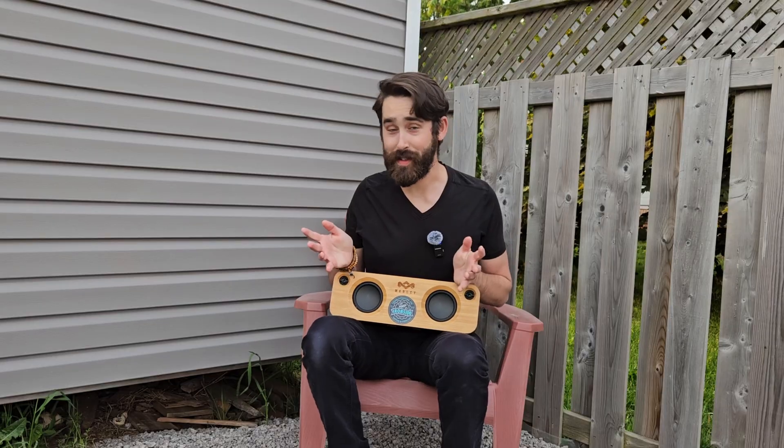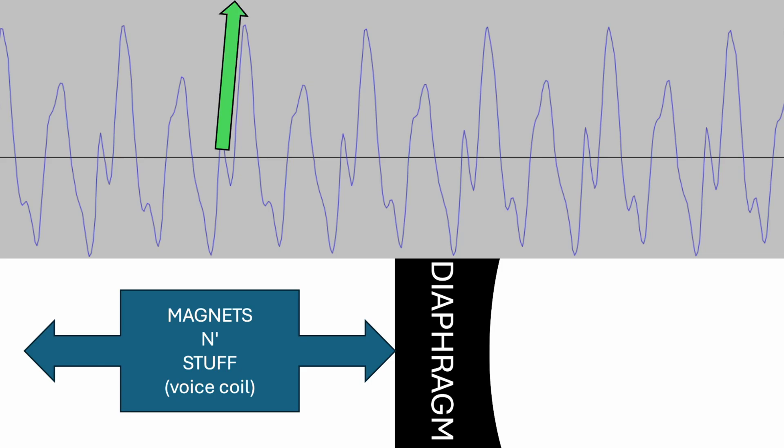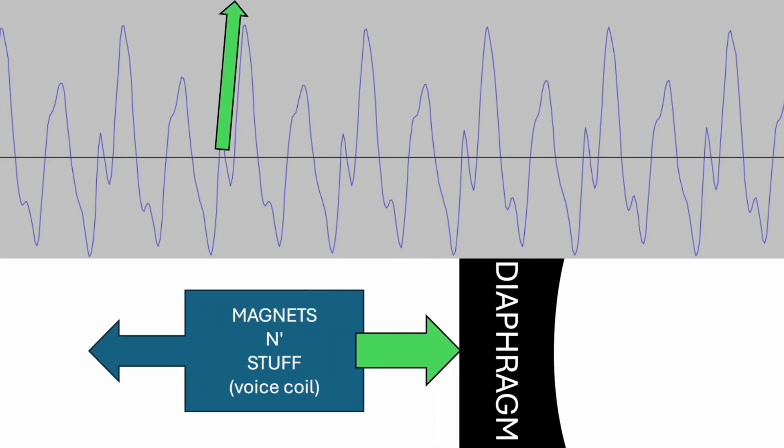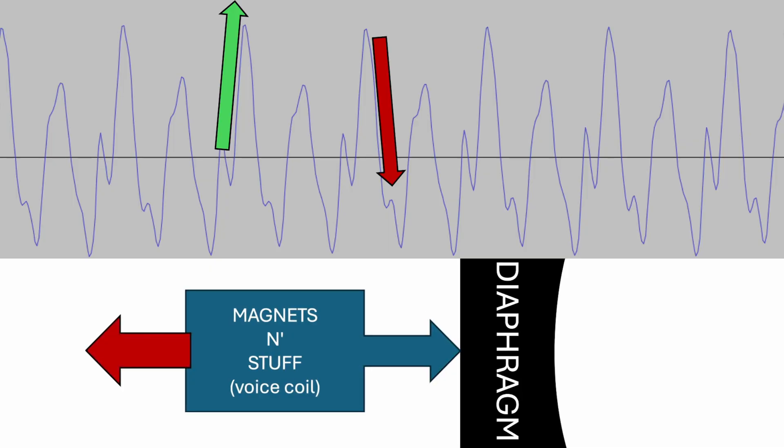The waveform is basically instructions for the speaker that tell it how to move the diaphragm. When the waveform goes up, it's telling the speaker to push the diaphragm out. When the waveform goes down, it's telling the speaker to pull the diaphragm back in. This back-and-forth motion can happen thousands of times per second, which is faster than I can blink. If you want to know more about how speakers turn electrical signals into back-and-forth motions, you can check out my last video.